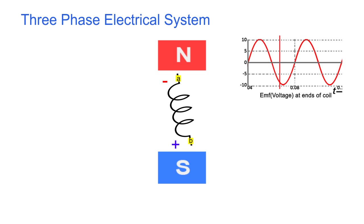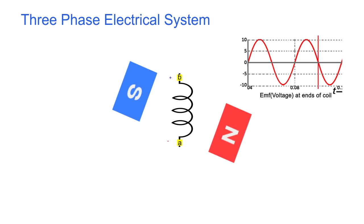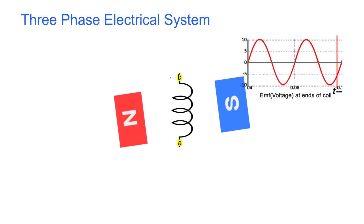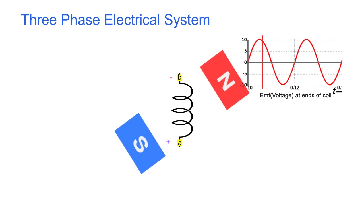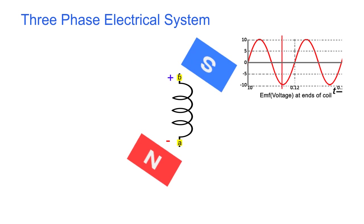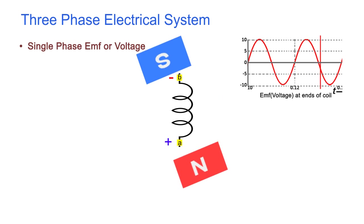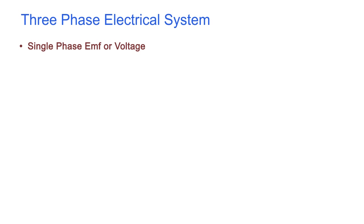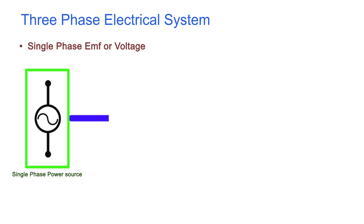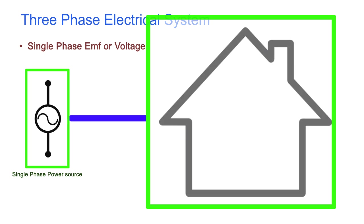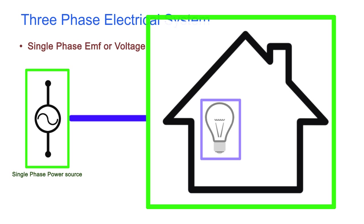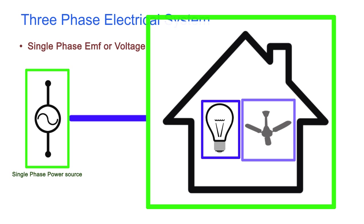We can produce the same alternating EMF in the coil by making the coil stationary and rotating the magnetic field. This is called the generation of single phase EMF or voltage. We can use this alternating voltage to run our single phase domestic loads like an electric bulb or a ceiling fan.